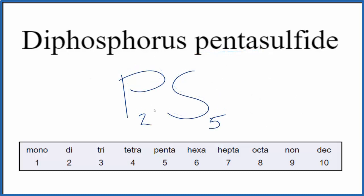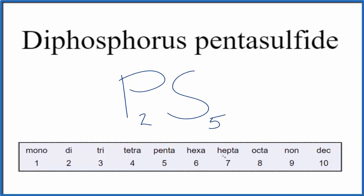If you are given the formula P2S5 and asked to write the name, you'd know that you have two non-metals. So you'd have to use the prefixes — two would be 'di' and five would be 'penta' — giving you diphosphorus pentasulfide, P2S5.